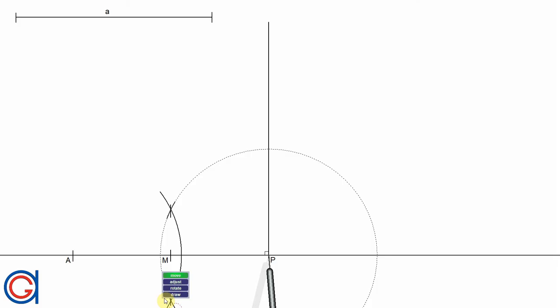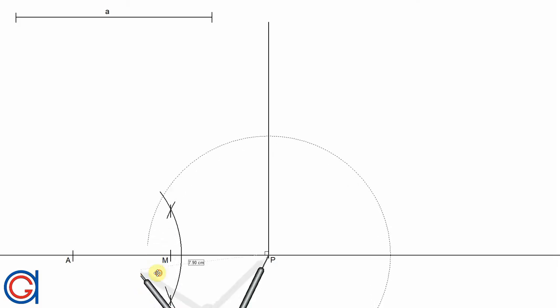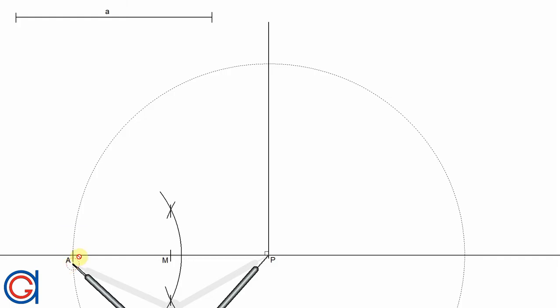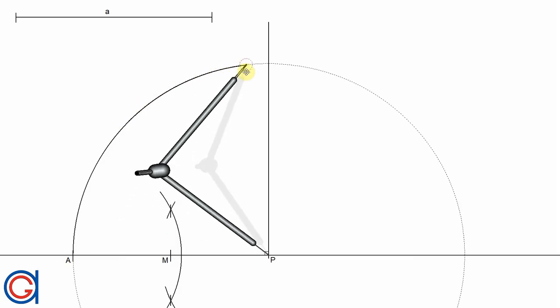Now setting the compass on point P and with the radius PA, we will scribe an arc to the right, cutting the previous vertical perpendicular line at a new point which we will call Q.